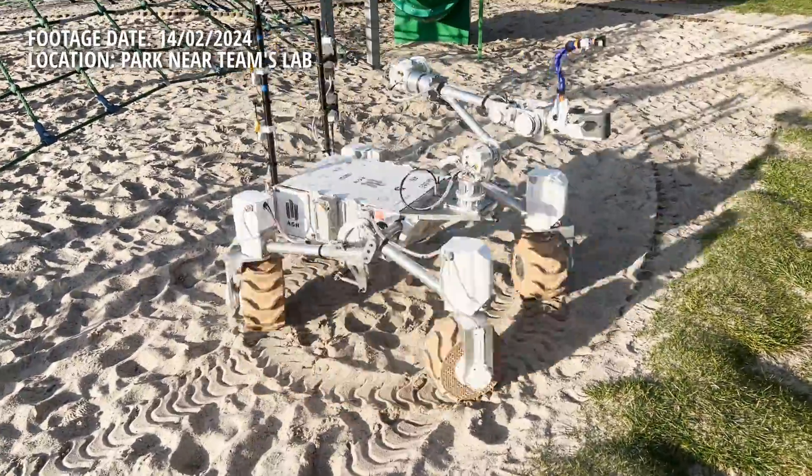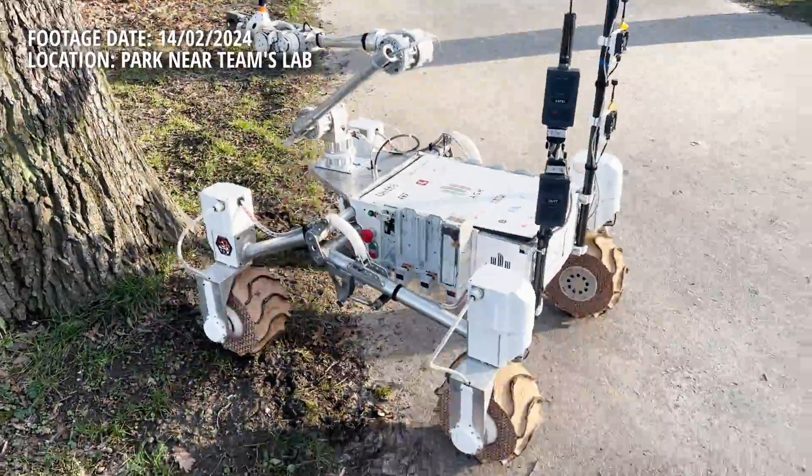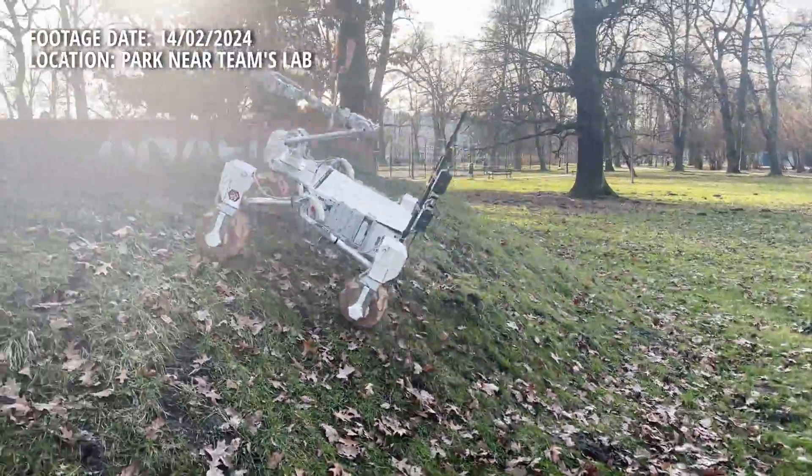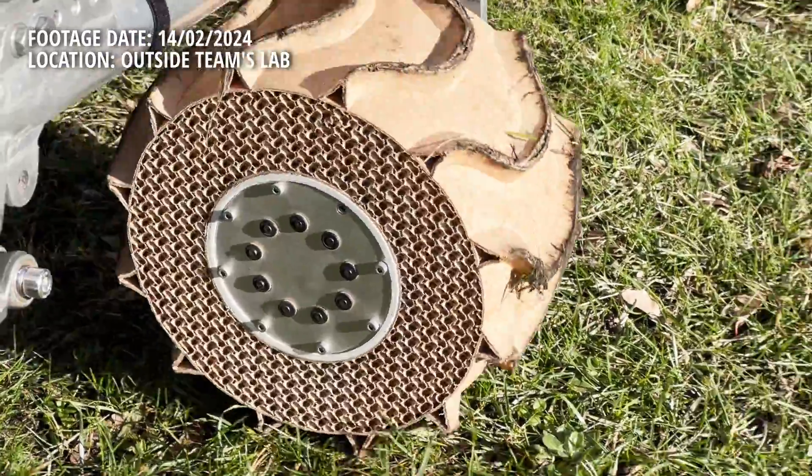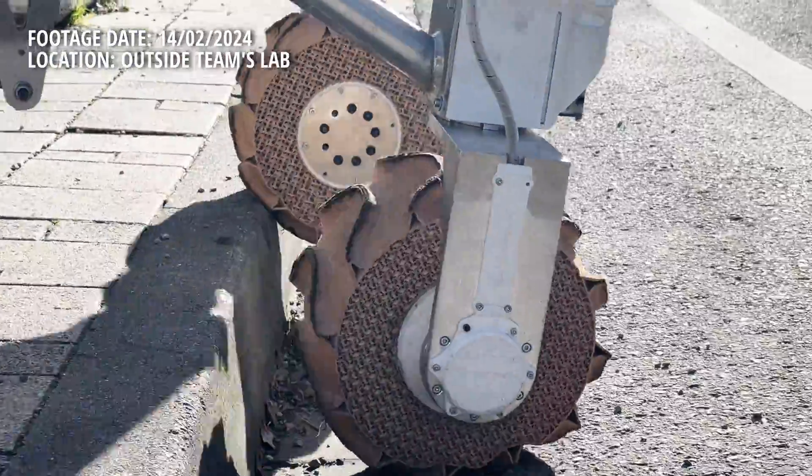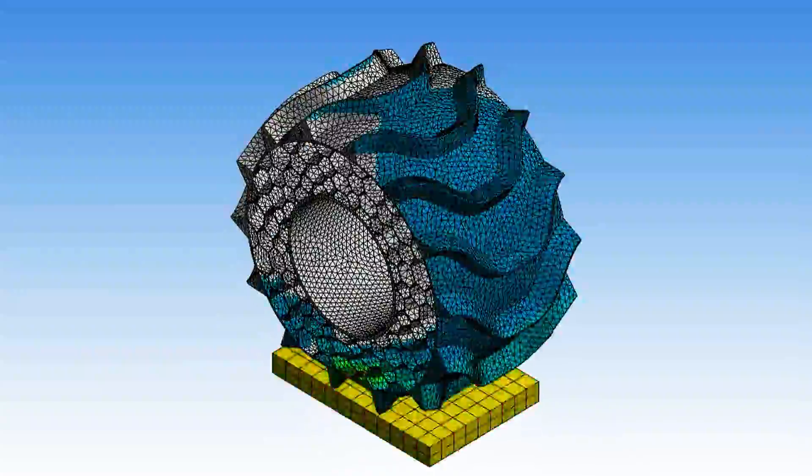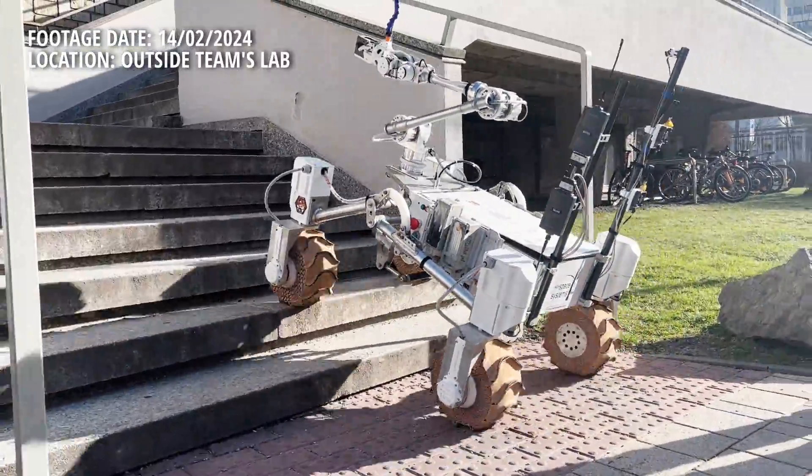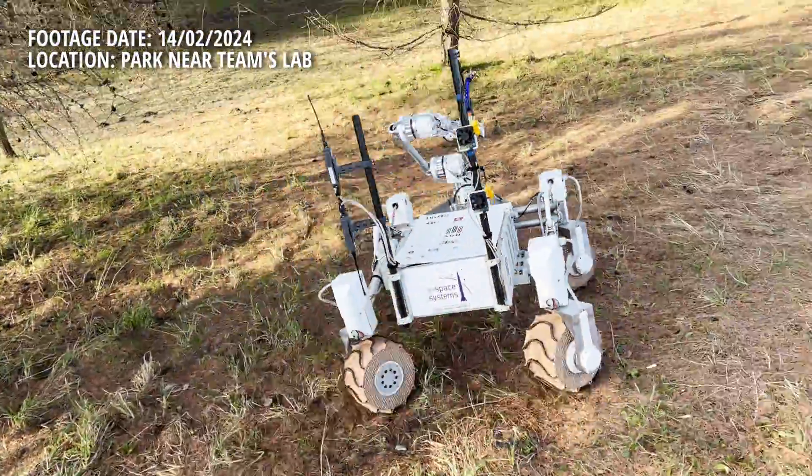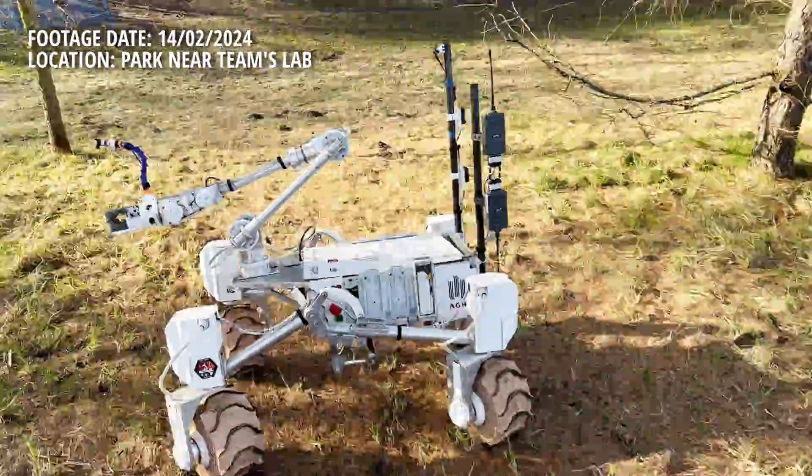The rover's drive system is based on a rocker suspension and four independently turned and propelled wheels. This allows us to drive sideways, diagonally and turn in place. The tires were 3D printed and are the result of many tests and iterative experiments. The mechanical design significantly increases effective ground clearance and helps to maintain lower center of gravity on extremely uneven surfaces.